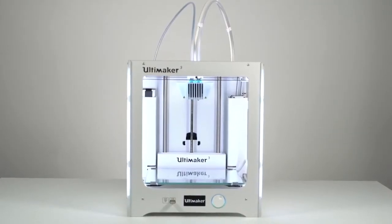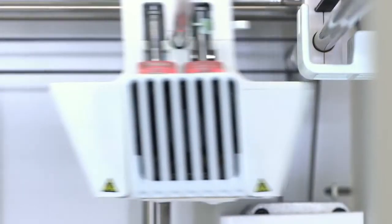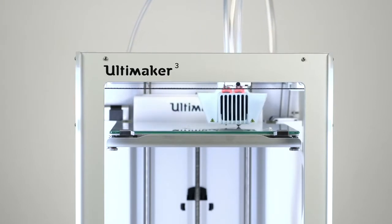To print the antennas, we used the Ultimaker 3. 3D printing works by heating up the material and pushing it down a nozzle in a process called extrusion.